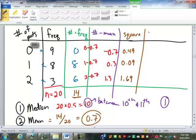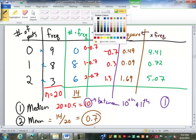The next step is take this value, the squares, times the frequency. Nine times point four nine is four point four one. Eight times point nine is point seven two and three times one point six nine is five point seven. Everything look kosher so far?